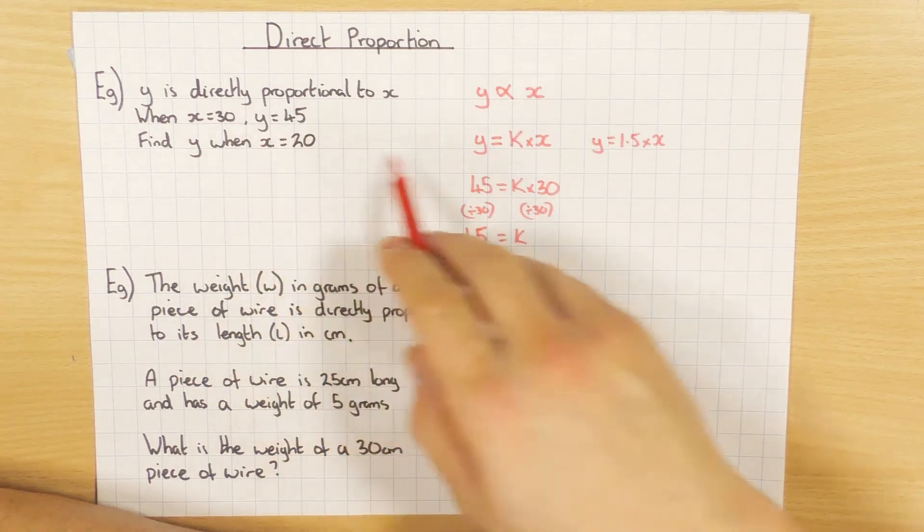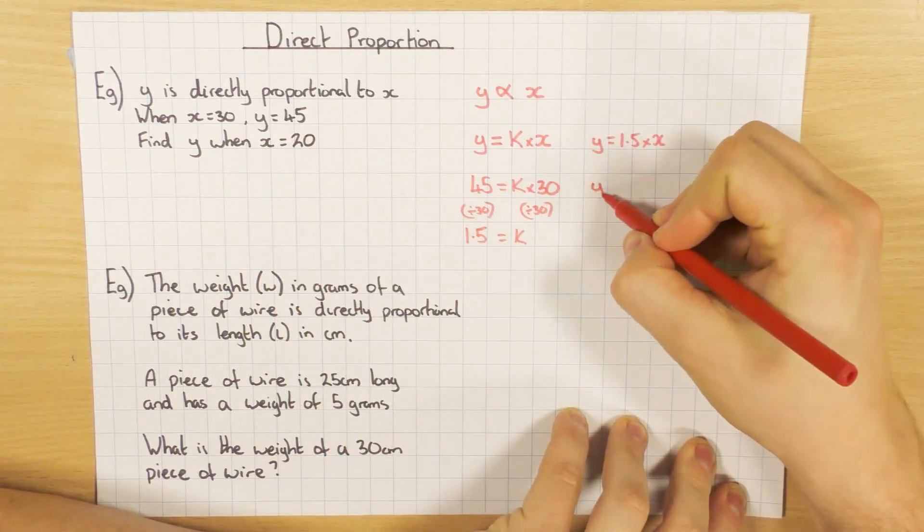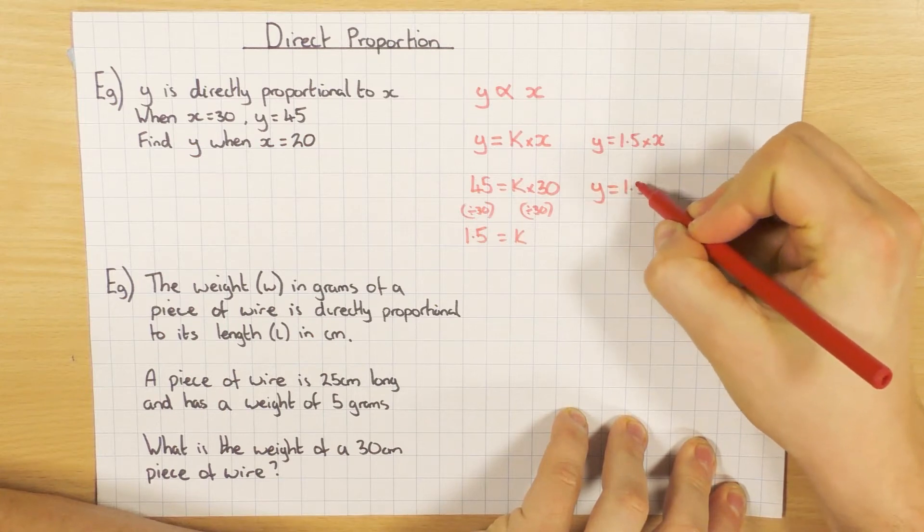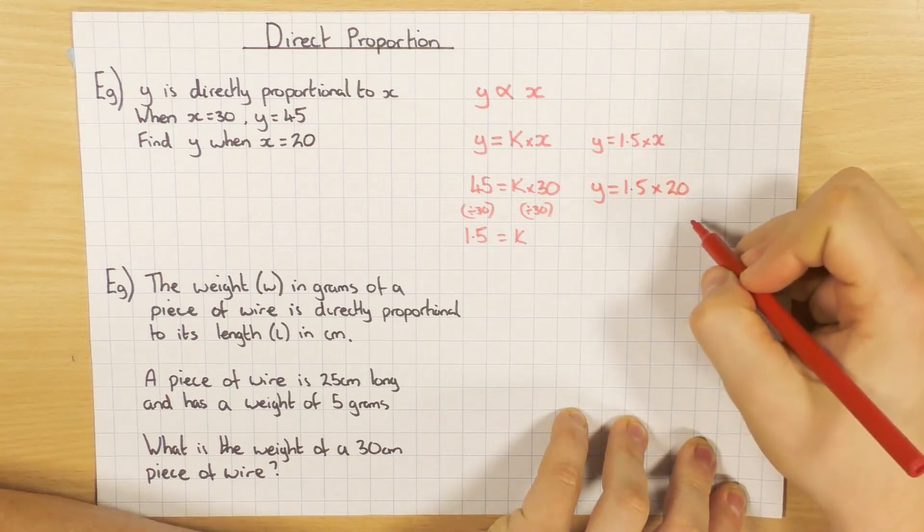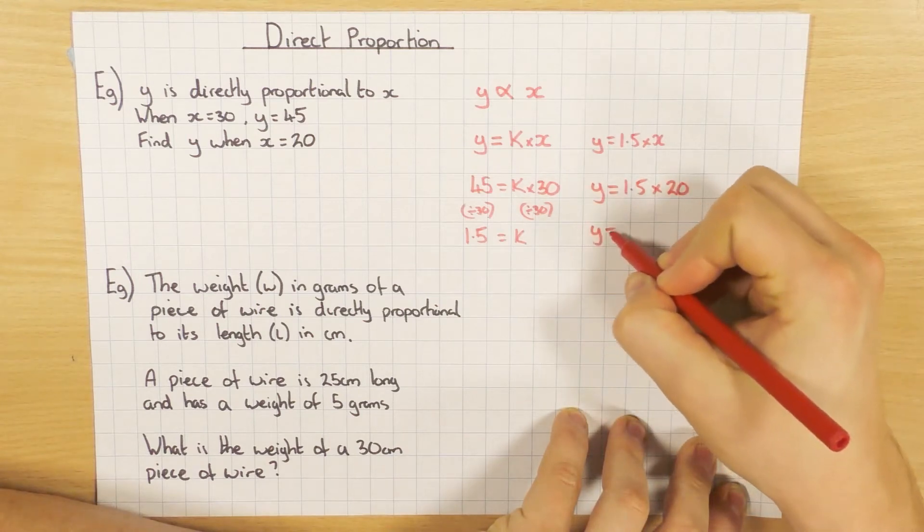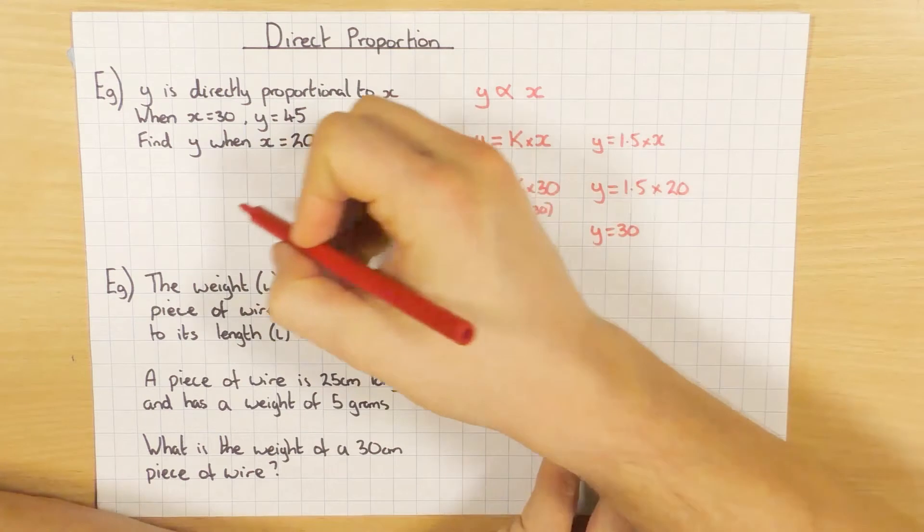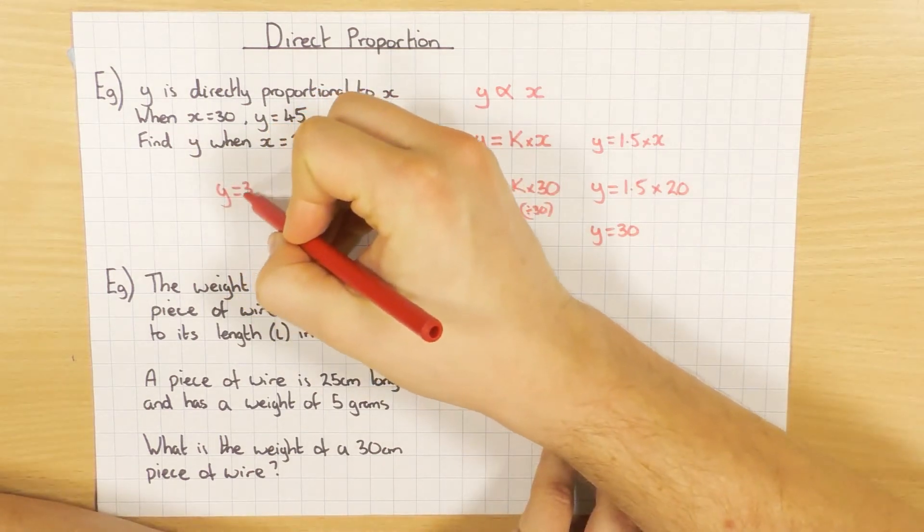So all I've got to do now is put x is 20 into my formula. So y equals 1.5 times x, well x was 20. So 1.5 times 20, so y would be 30. And you are done.